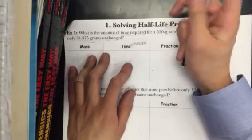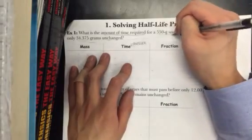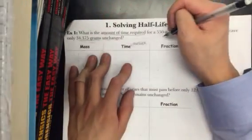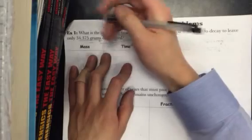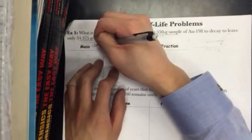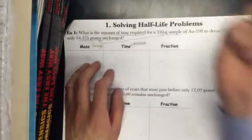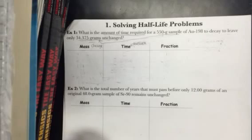Then what we label the change column is the quantity that changes. Obviously 550 grams is becoming 34.375, so we label the mass, which is in grams, the change column, since that's the quantity that changes. So now we finish step 1.